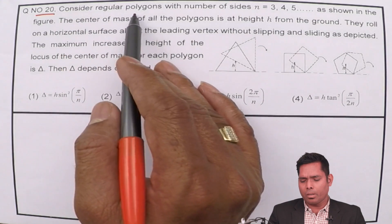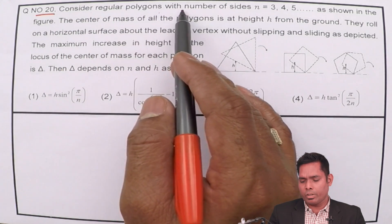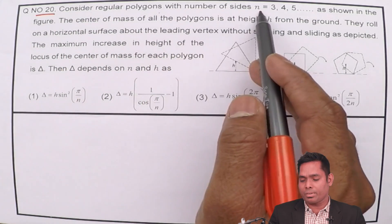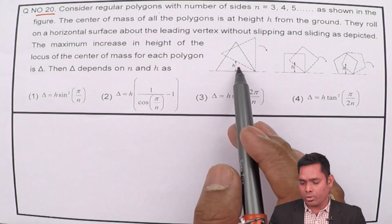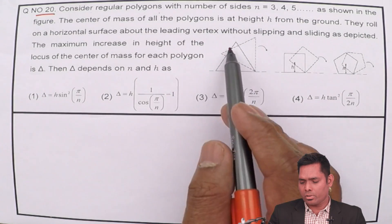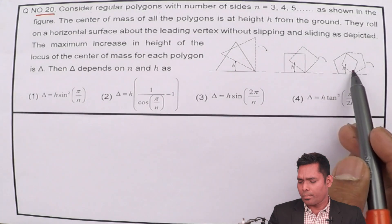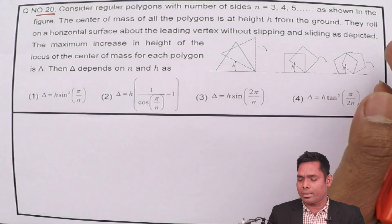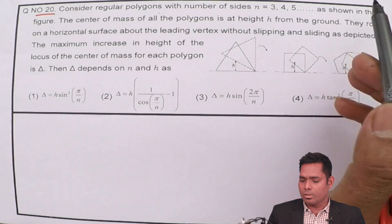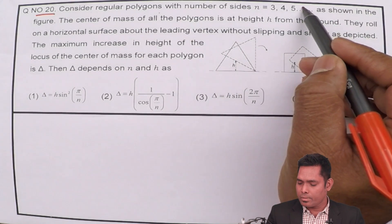Consider regular polygons with number of sides 3, 4, 5 — like 3 sides, 4 sides, 5 sides — it can have 6 sides, 7 sides, any number of sides, say n number of sides.